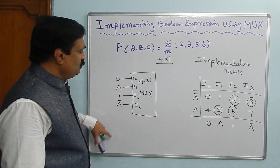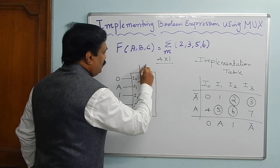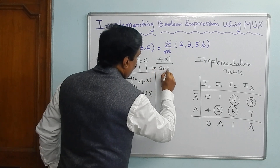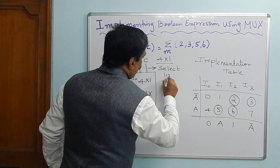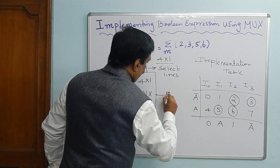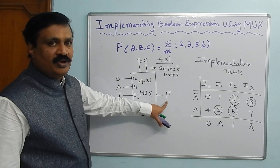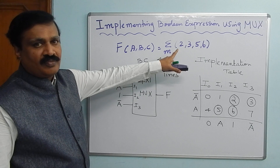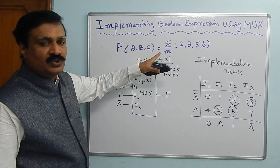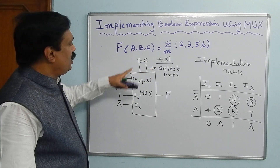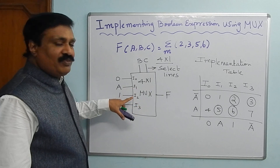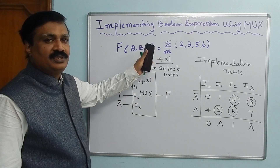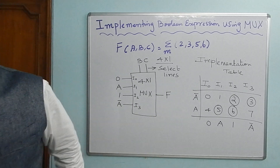We take one variable as an input and two select lines. Therefore you take B and C as the select lines, and you are getting F — that means Y output. This is the 4-by-1 multiplexer implementation for this equation. We can implement using an 8-by-1 also, but by using one variable as an input and two variables as select lines, it is component-wise and cost-wise lesser than an 8-by-1 multiplexer. Thank you. If you have any doubt, drop a comment. Thank you very much.